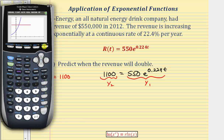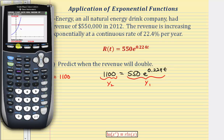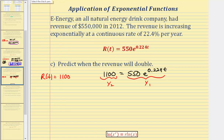We determine the point of intersection by pressing second trace for the calculation menu, then option 5 for intersection, and pressing enter three times. The result gives approximately x equals 3.09, which is really the value of t. So graphically, t is approximately 3.09, meaning the revenue will double approximately 3.09 years after 2012.